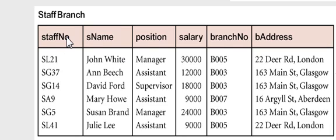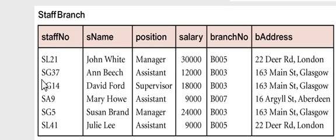The transitive dependency will show you: staff number functionally determines branch number. How do we know that? Because staff number functionally determines everything — it's the primary key. Staff number functionally determines S name, it functionally determines position. Every time I see SG37, it's NB. The primary key functionally determines everything.